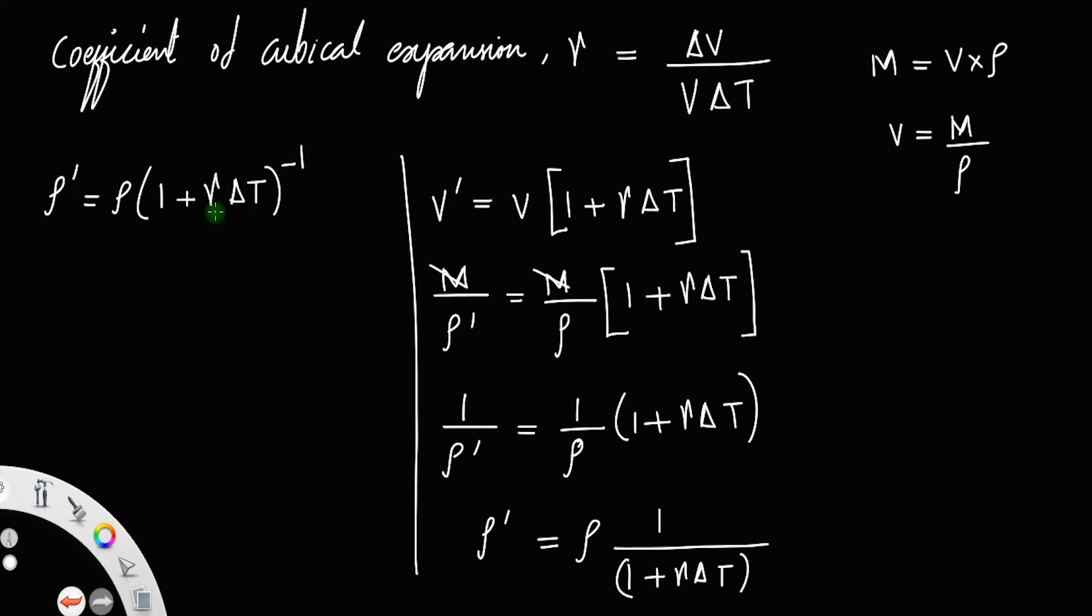Since this gamma is very small, also the delta T is very small, using the binomial expansion, you can put the minus 1 in between 1 and gamma delta T. So therefore, rho dash is equal to rho into 1 minus gamma delta T.